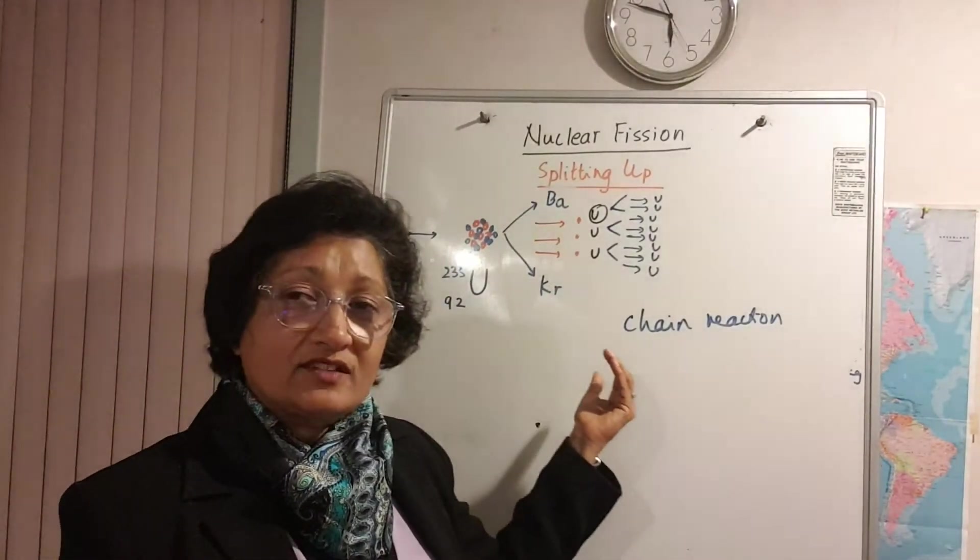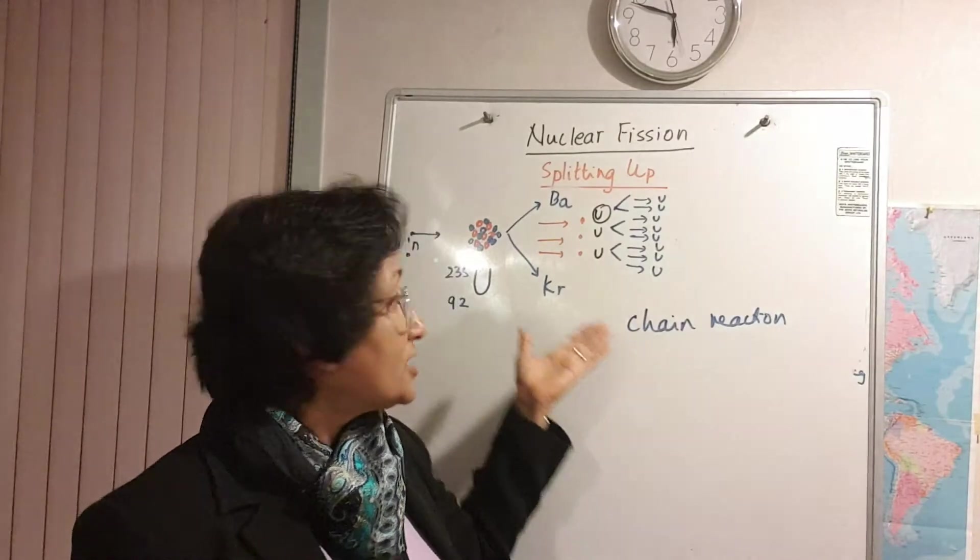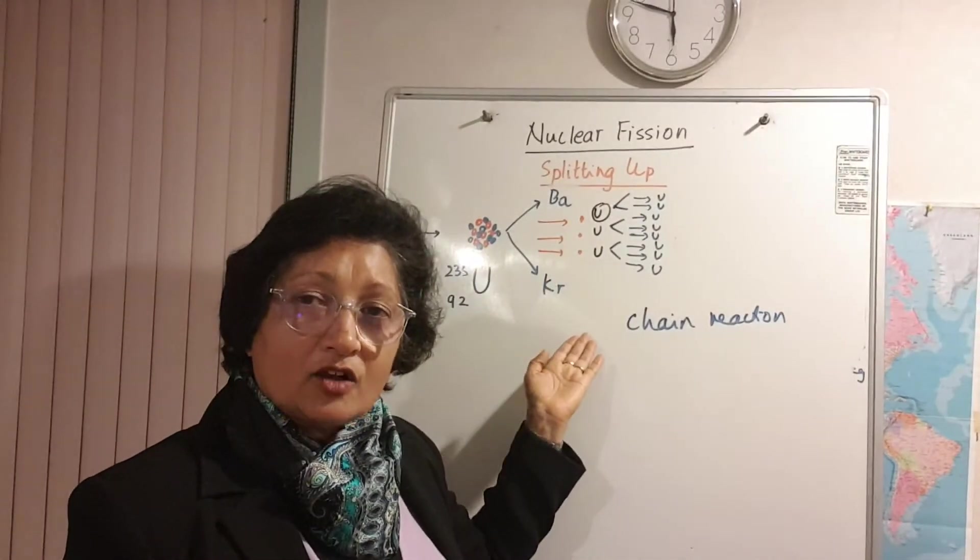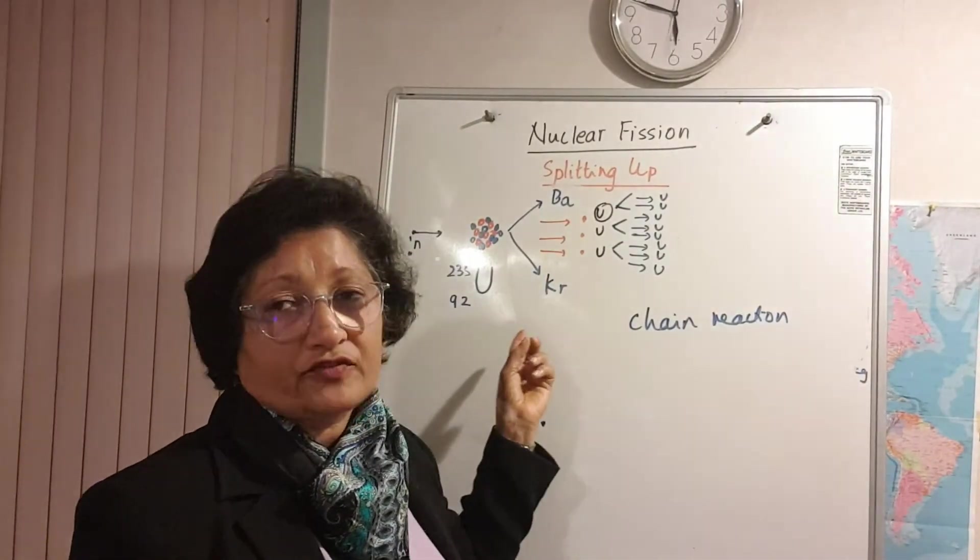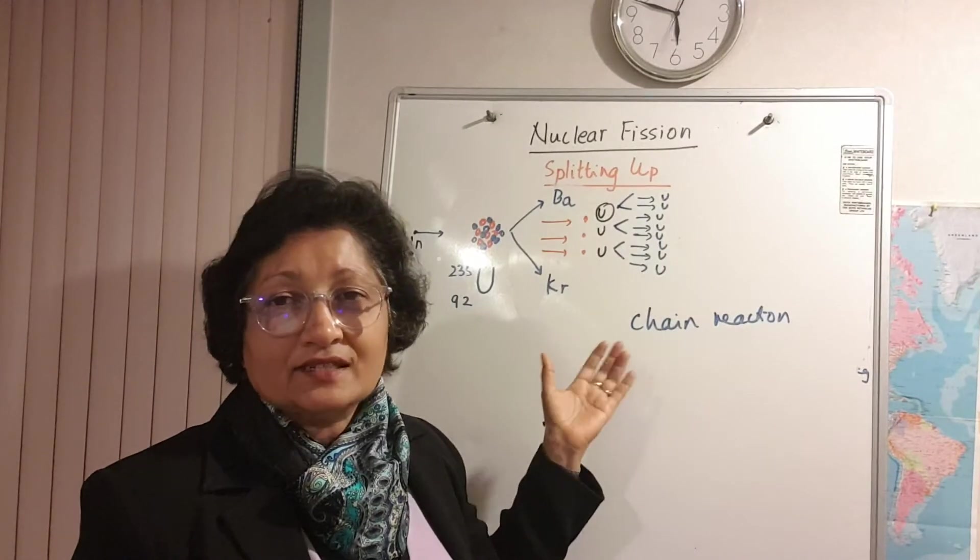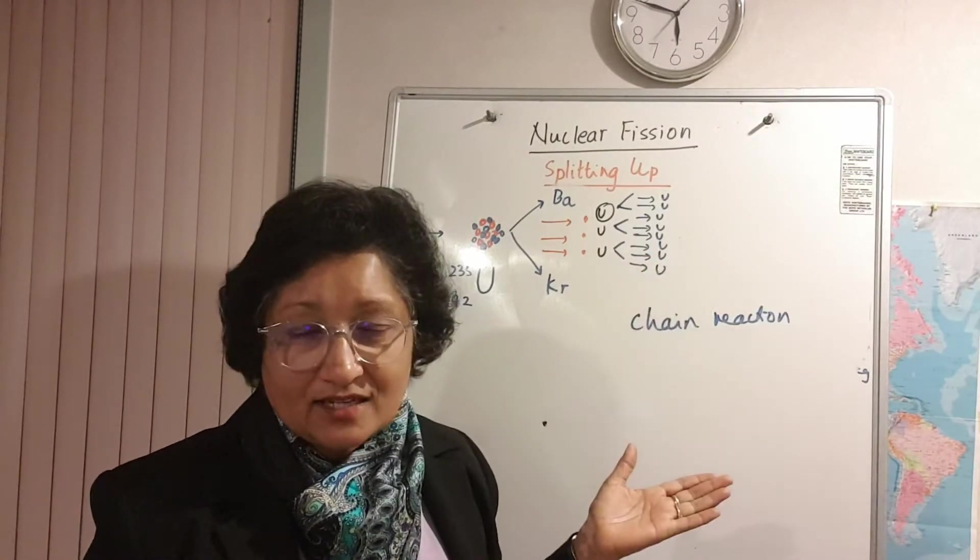Now because they are at low energy levels, the mass per nucleon of barium and krypton are going to be lower than that of the uranium nucleus and this difference in mass is what's given out as energy.